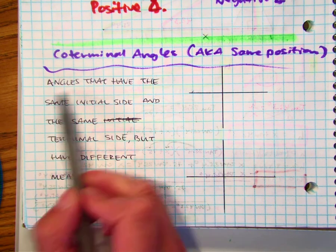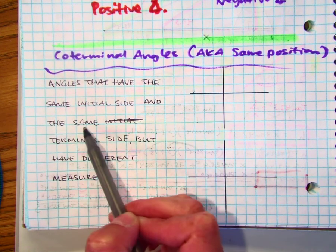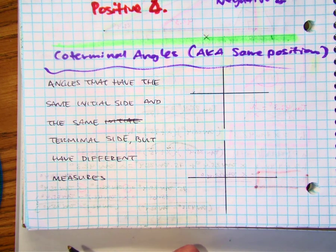Here's our formal definition. Angles that have the same initial side and the same terminal side but have different measures.